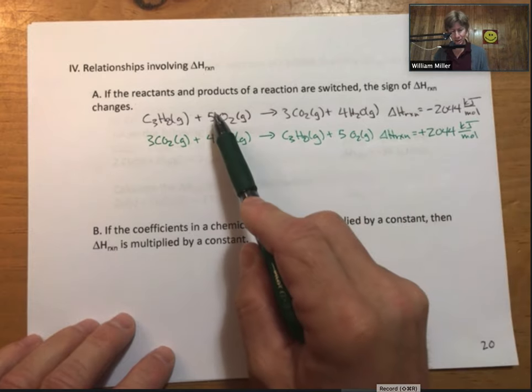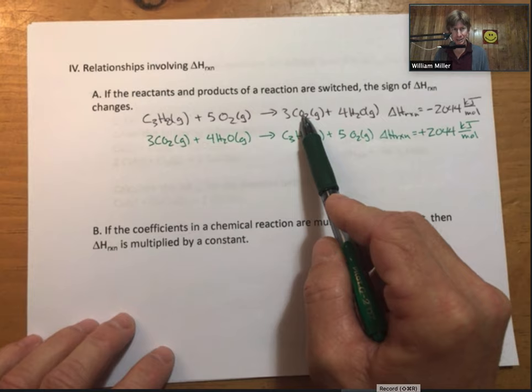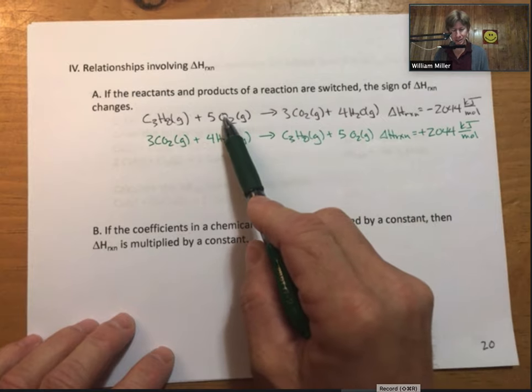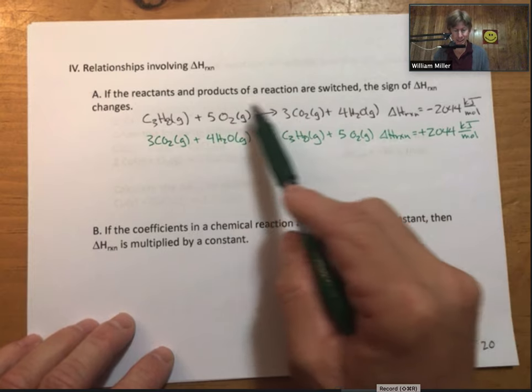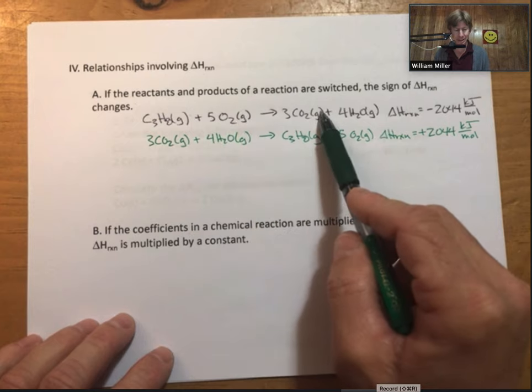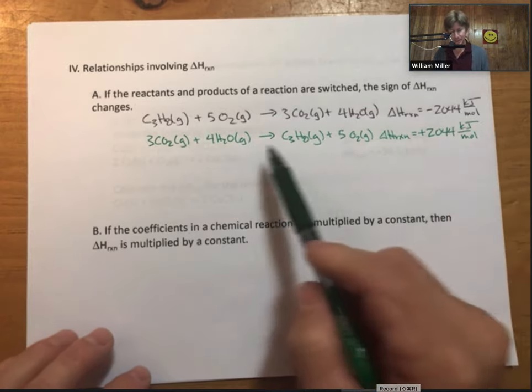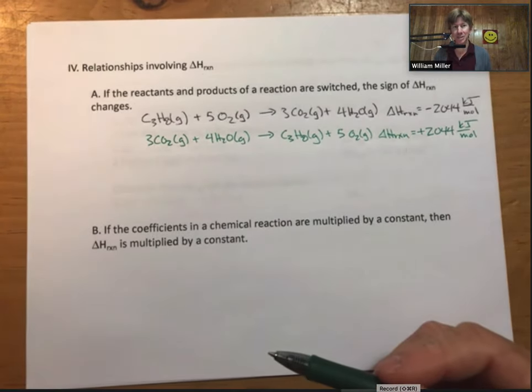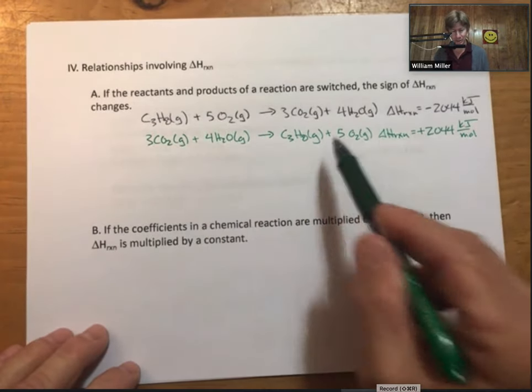So delta H reaction is the heat energy per mole released. It is also the change in potential energy as you go from reactants to products. So because the reactants have more potential energy, the products have less. As you go from reactants to products, you release energy, that energy goes to the surroundings. And so that same amount of energy must be taken in for the reverse process, or when the reactants and products are switched.